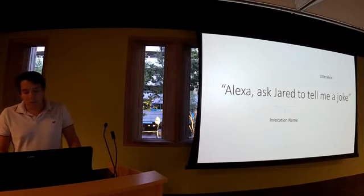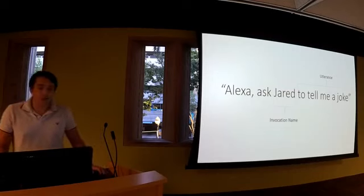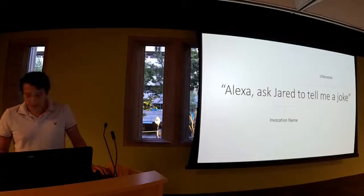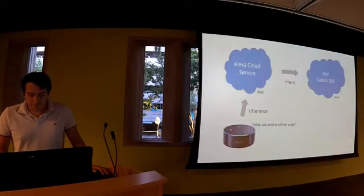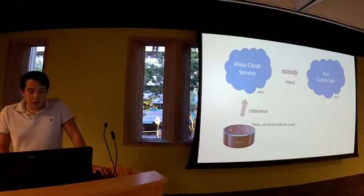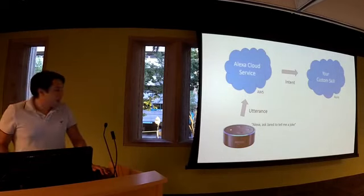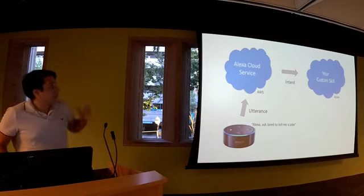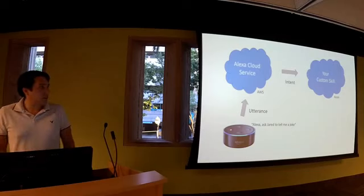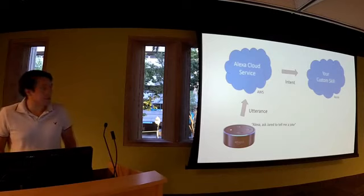The second part of this phrase is called the utterance, and this utterance will be translated into an intent to do something, like an action for your skill. Underneath the covers, bird's eye view, you say Alexa, ask Jared, tell me a joke. The utterance and the invocation name go to the Alexa cloud service. It interprets the command received and will issue an intent to your custom skill.